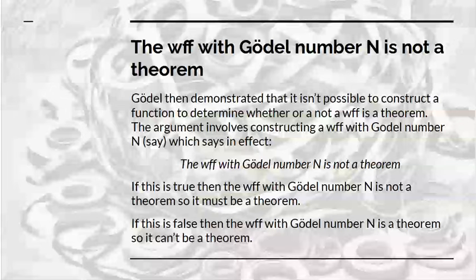Gödel demonstrates that it isn't possible to construct a function that determines whether or not a well-formed formula is a theorem. The argument involves constructing a well-formed formula with a Gödel number n, which says, in effect, the well-formed formula with Gödel number n is not a theorem. That's something very similar to what Turing did. If it's true, then the well-formed formula with Gödel number n is not a theorem, then it's been proven, so it must be a theorem, which is a contradiction. If it's false, then the well-formed formula with Gödel number n is a theorem, so it can't be a theorem. So we have a mutual contradiction, but it's even deeper in Gödel's case. He's got three levels of paradox.